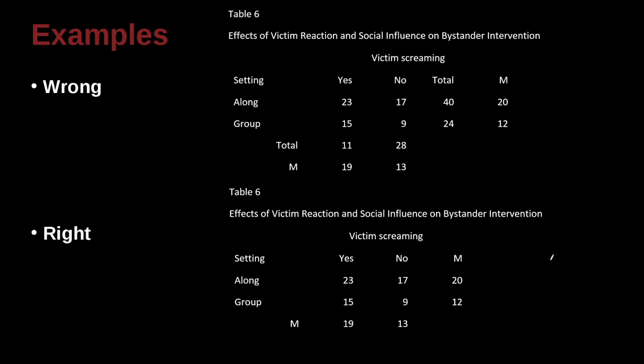Let's look at a couple more examples here. So in this one, table six, effects of victim reaction and social influence on bystander intervention. So we have the victim screaming. So we have the column, yes, the victim screamed. No, the victim did not scream.